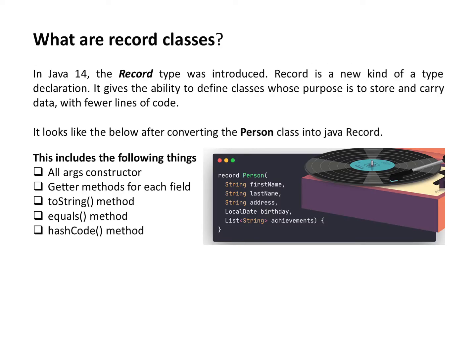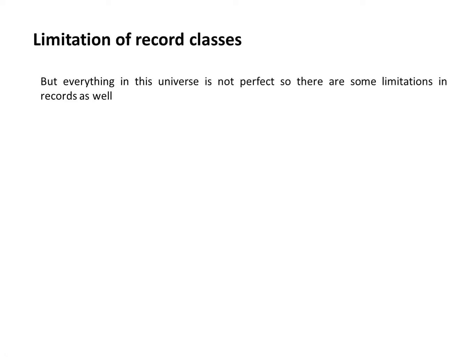In Java 14, the record type was introduced. A record is a new kind of type declaration that gives the ability to define classes whose purpose is to store and carry data with fewer lines of code. As you can see here, this is a record class - it's like converting the Person class into a Java record. This record class automatically includes: an all-arguments constructor, getter methods for each field, toString method, equals method, and hashCode method.